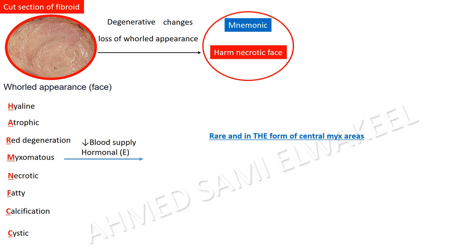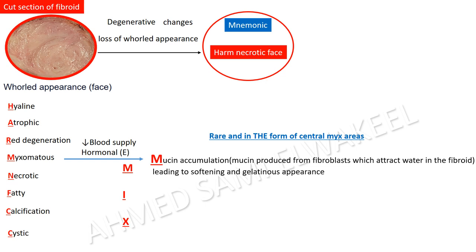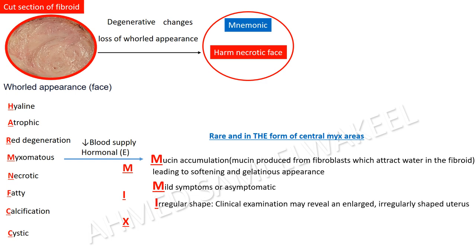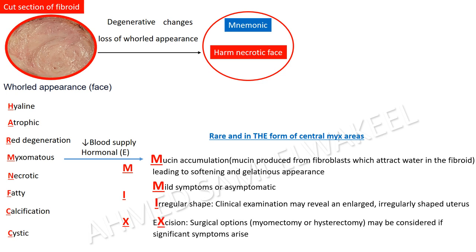Myxomatous degeneration occurs due to poor blood supply or hormonal changes and is rare. Mnemonic MIX: M — mucin accumulation, mucin produced from fibroblasts attracts water into the fibroid leading to softening and gelatinous appearance; M — mild symptoms or asymptomatic; I — irregular shape, clinical examination may reveal an enlarged, irregularly shaped uterus; X — excision, surgical option — myomectomy or hysterectomy may be considered if significant symptoms arise.